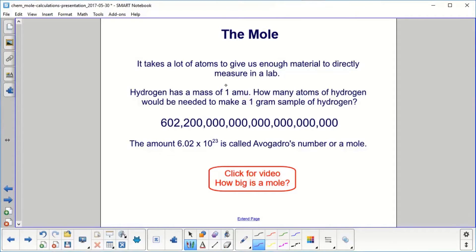So let's start with hydrogen. It has a mass of one atomic mass unit, right? Just has one proton. How many atoms of hydrogen would be needed to make a one gram sample of hydrogen? This many. I'm not even going to try and read that. That's why we have scientific notation. And that number is 6.02 × 10^23. And it's called Avogadro's number or a mole.